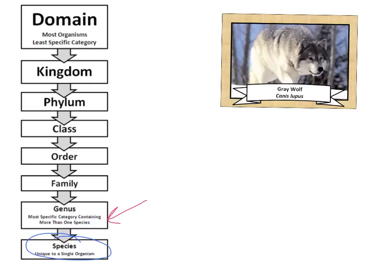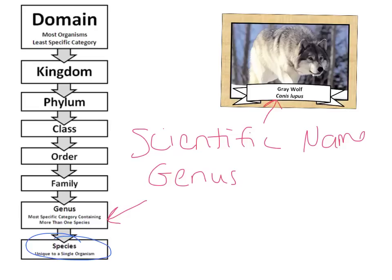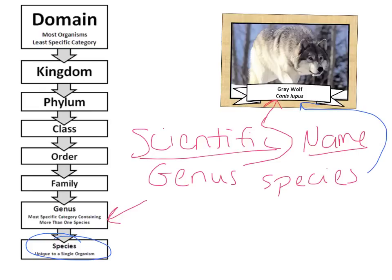We write scientific names using genus first — it's capitalized — and then the species comes second in lowercase. For example, with the gray wolf, Canis lupus: Canis is the genus and lupus is the species. There will be a few other species that start with Canis, because that is still a category with more than one organism. The more categories that organisms share, the more closely related they are.